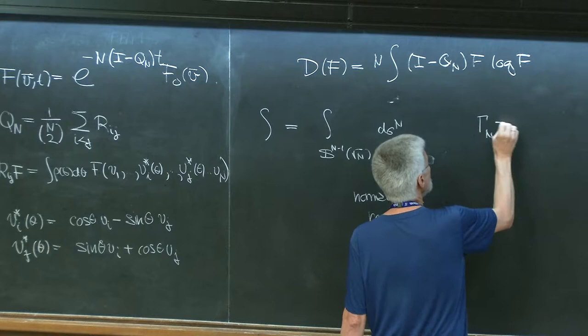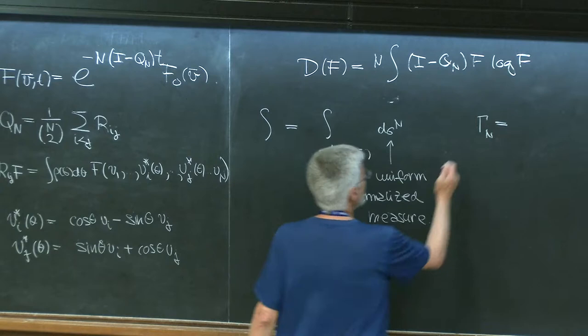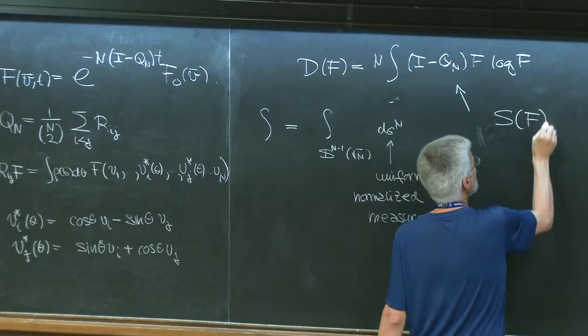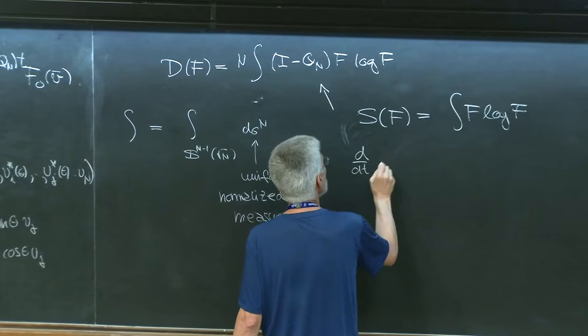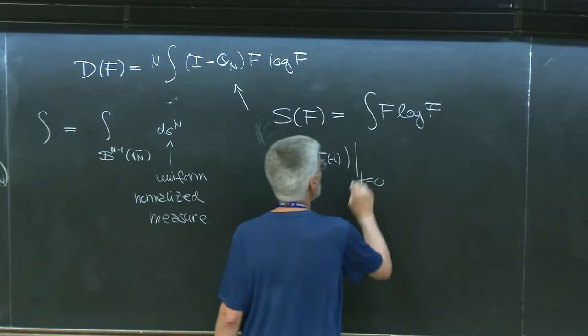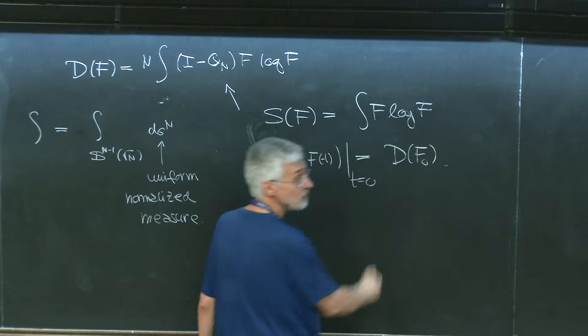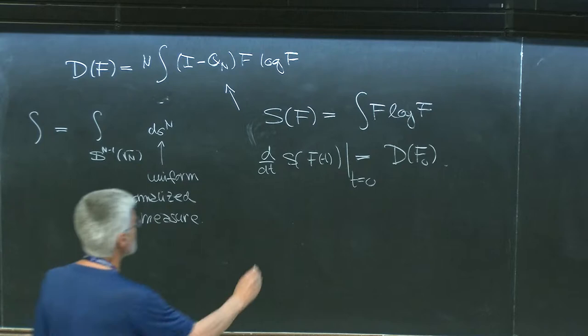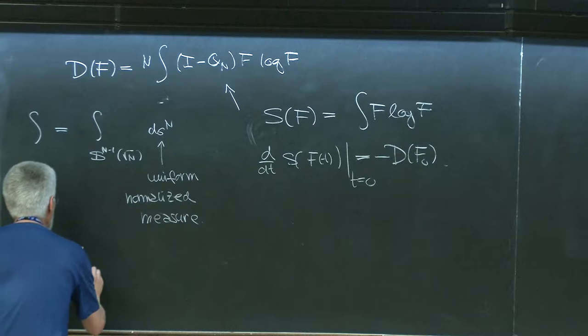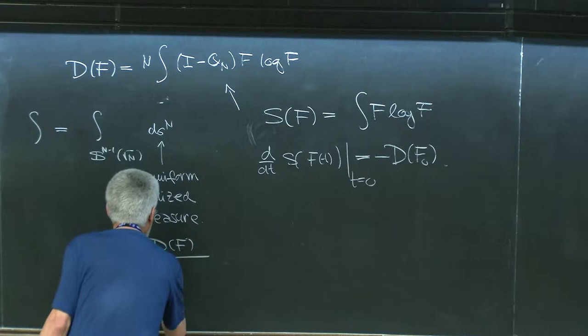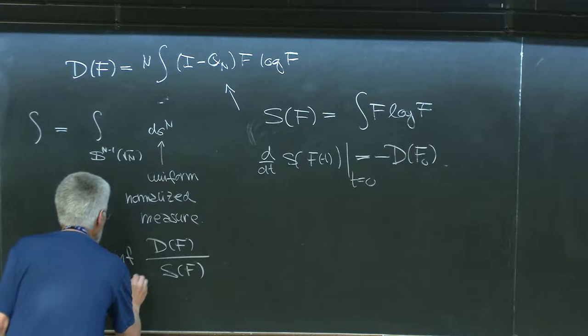We also introduced the quantity gamma_n. The dissipation comes from taking the entropy — the integral of F log F — and differentiating it with respect to t at t=0. That gives precisely D(F_0), which is the dissipation (with a minus sign). Then we introduced what is called the entropy production, gamma_n, which is D(F) divided by S(F), taking the infimum over all densities with integral equal to 1.